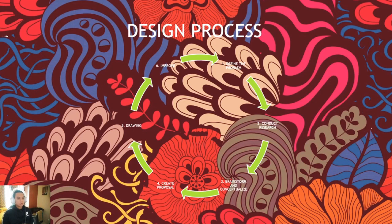Assalamualaikum Warahmatullahi Wabarakatuh. My name is Muhammad Hafizul Daniel bin Azmi and my metric number is AN190097. I will explain about the design process. We have 6 design process steps in order to complete our project: first, define the problem; second, conduct research; third, brainstorm and conceptualize; fourth, create proposal; fifth, drawing; and sixth, improve.